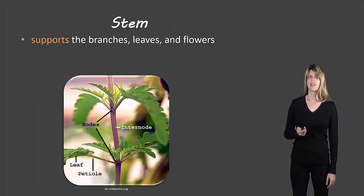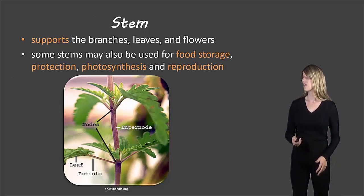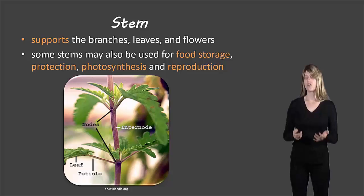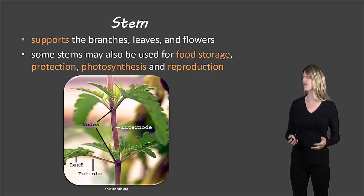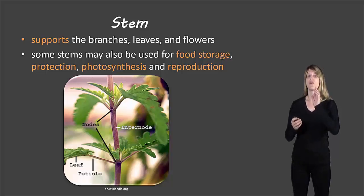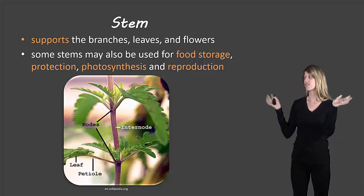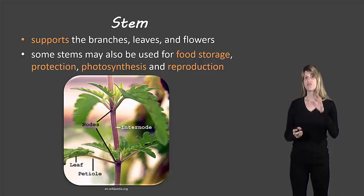The next is the stem, and this supports the branches, the leaves, and the flowers. Some stems are also used for food storage, protection, photosynthesis, and reproduction — not all of them have those roles, but some do. You can see in this picture where the leaves come out from the stem; we call those nodes. And in between the nodes are what we call internodes, which are just different sections of the stem.